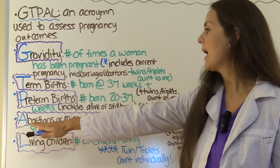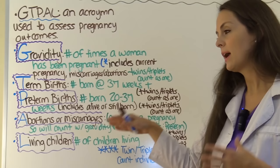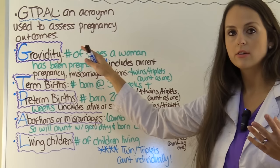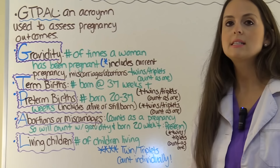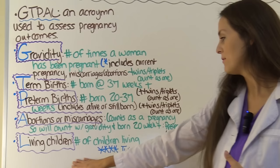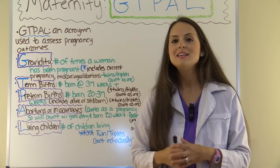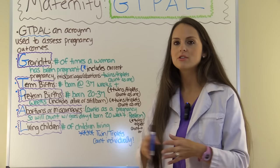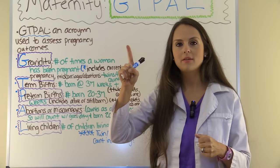A stands for abortions or miscarriages. Whenever you're calculating this, you will count it as a pregnancy, as discussed under gravida. L stands for living children — this is the number of living children she has. Importantly, multiples count individually under L. So if she has healthy twin girls, gravida would be one because that was one pregnancy, but living children would be two because they count individually.